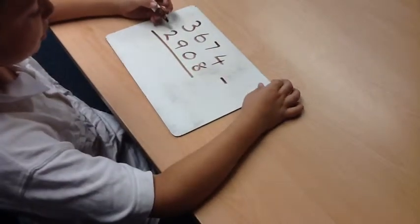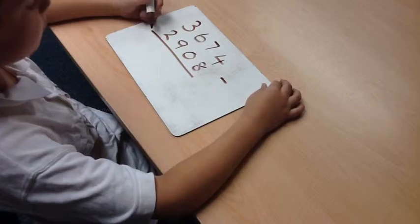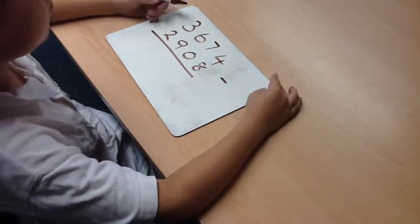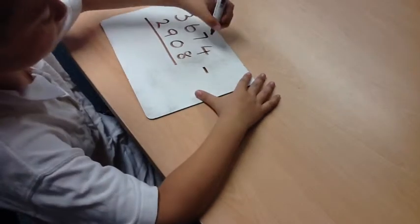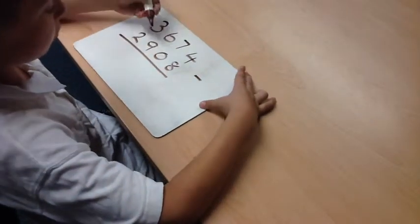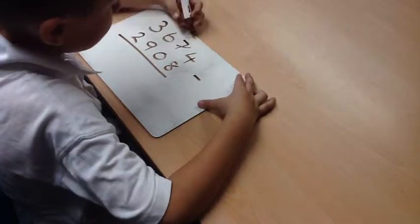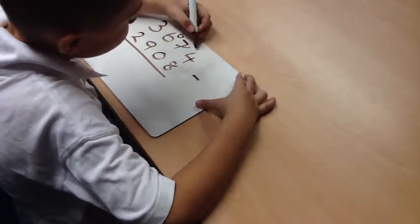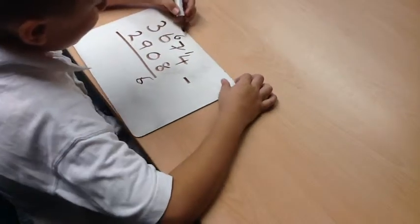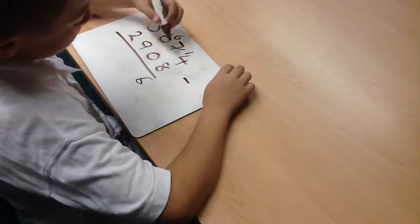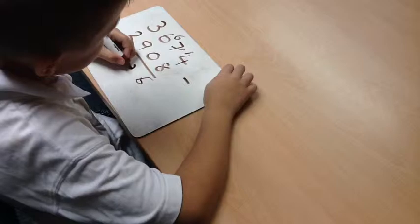Hello, and today I'm going to be teaching you how to subtract 2,908 from 3,674. So first we've got 4 take away 8, which we can't do, so I'll have to exchange and that becomes 6. And then we've got 14 take away 8, which is 6. Now we've got 6 take away 0, which is just 6 again.